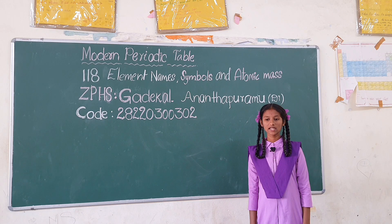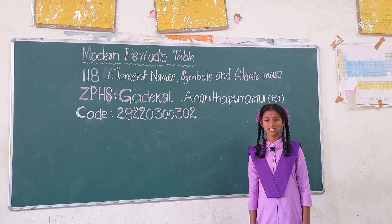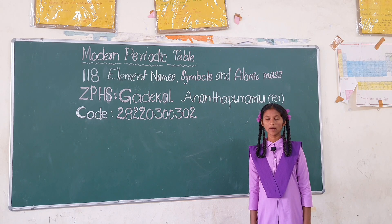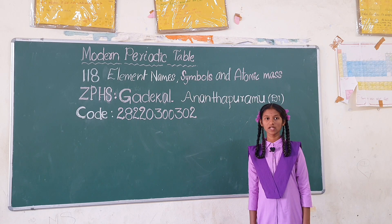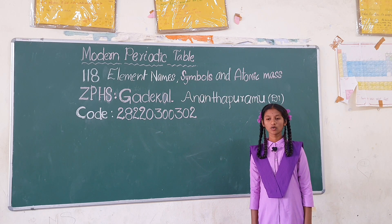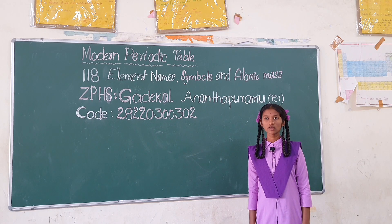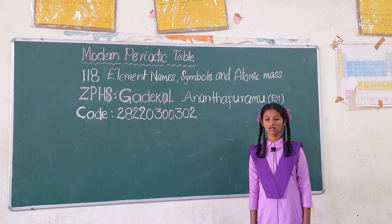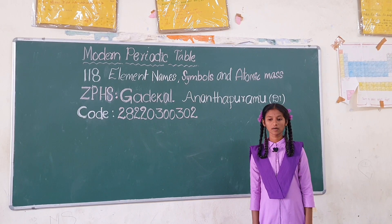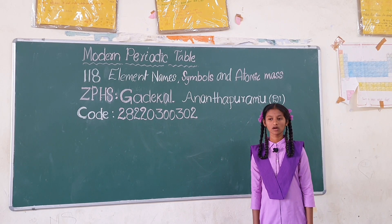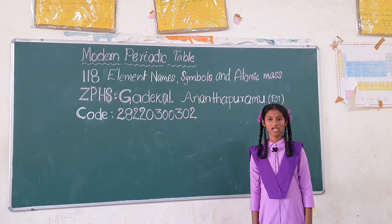Hafnium Hf 178.5, Tantalum Ta 180.9, Tungsten W 183.9, Rhenium Re 186.2, Osmium Os 190.2, Iridium Ir 192.2, Platinum Pt 195.1, Gold Au 197, Mercury Hg 200.5, Thallium Tl 204.38, Lead Pb 207.2, Bismuth Bi 209.